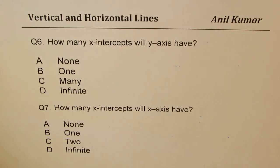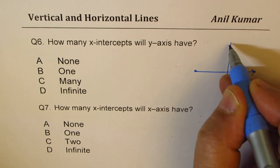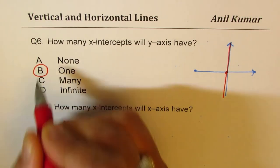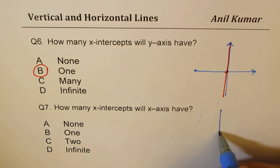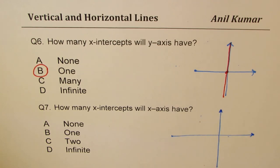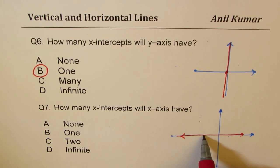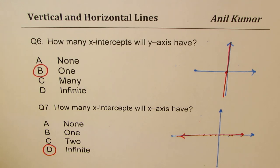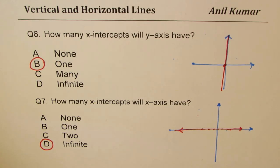Question seven: how many X-intercepts will the Y-axis have? Just one — so the answer is one. Question eight: how many X-intercepts will the X-axis have? The X-intercepts are all the points where the graph coincides with the X-axis, which is infinite. I hope you now have a clear understanding of vertical and horizontal lines, parallel and perpendicular lines, and X and Y intercepts. Feel free to write your comments and share your views. Thanks for watching and all the best.